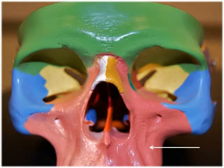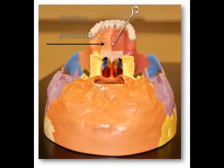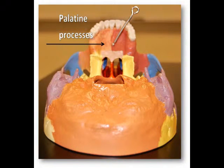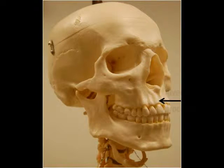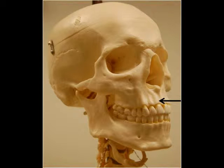Let's take a look at some of the major bony landmarks of the maxillae. The palatine processes are flat horizontal projections of the maxillae that form most of the hard palate. The alveolar processes are ridge-like arches that contain the alveoli, which are the tooth sockets for the upper maxillary teeth.